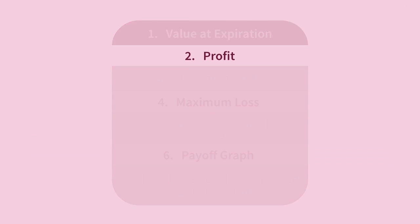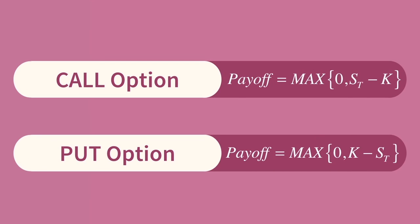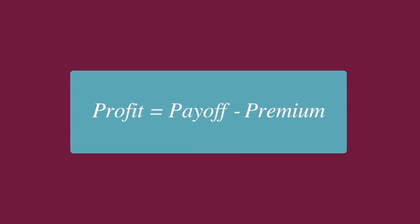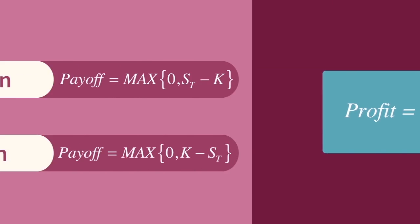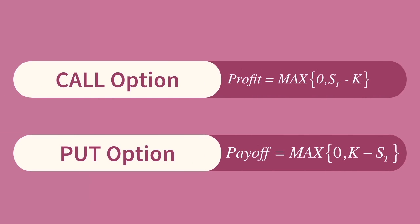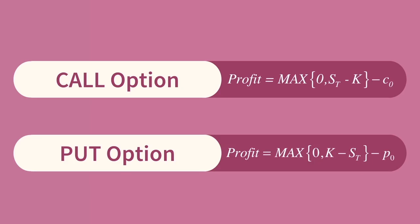Now let's talk about profit. At expiration, the option will either have some positive value or zero value — it cannot have a negative value. But this only describes the option's value at the end. For profit, we need to factor in how much it cost us to get there. Profit is equal to payoff minus premium. For a call option, we take the payoff and subtract c-sub-zero, the initial cost of the call. For a put option, we take the put payoff and subtract p-sub-zero, the initial cost of the put.